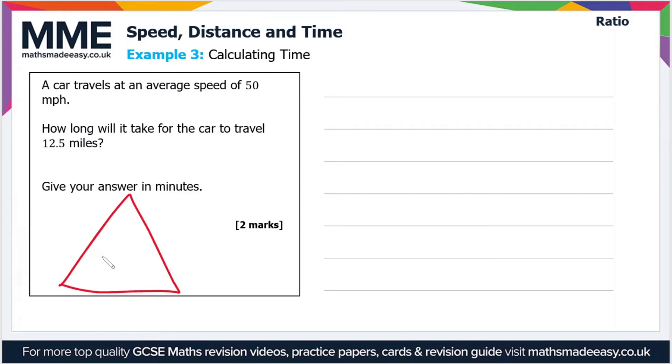Once again draw out our triangle, so we've got speed, distance and time. So there we go. Alright, so we are after the time this time. So we get the time by dividing the distance by the speed.